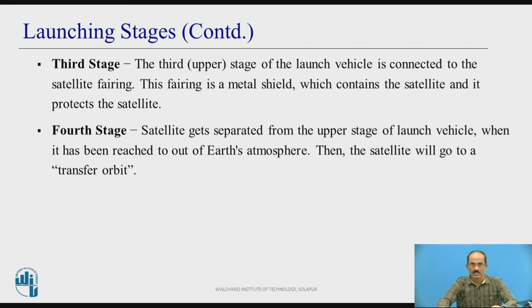The third stage, or upper stage, of the launch vehicle is connected to the satellite fairing. The fairing is a metal seal which contains and protects the satellite — that means the entire satellite is covered with a metal seal. In the fourth stage, separation of the upper stage from the launch vehicle occurs. The satellite gets separated from the upper stage of the launch vehicle when it has reached out of Earth's atmosphere. Then the satellite will go to a transfer orbit, which sends the satellite higher into space.